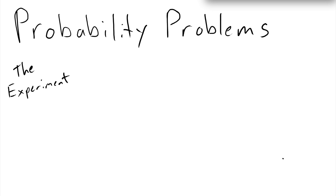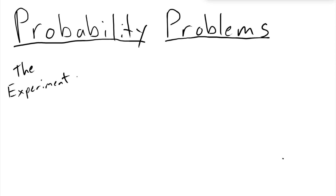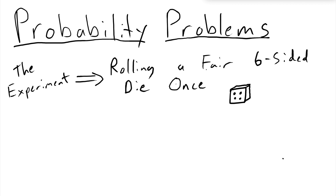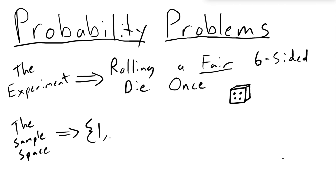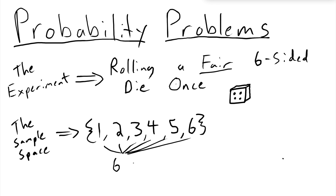This video is going to consist of problems. We're just going to do some problems, all related to the same experiment: rolling a fair six-sided die one time. The sample space is the numbers one through six. These are six outcomes — this is everything possible.